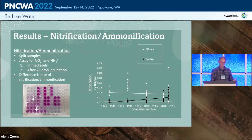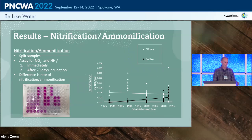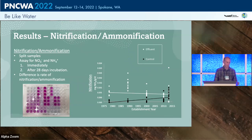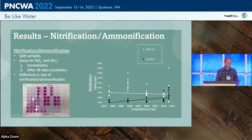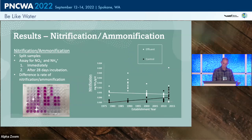Nitrification is measured with a standard split-sample analysis: half the sample is analyzed initially for nitrate and ammonium, and after a 28-day incubation the sample is analyzed again — the difference measuring nitrification.